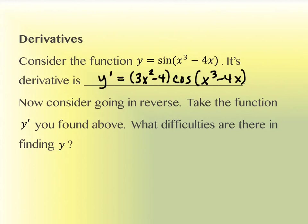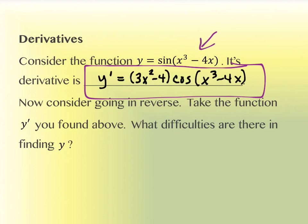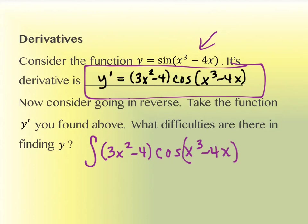What we're going to do in this section is we're going to consider going in reverse. That is, we're going to start with functions that look a lot more like this — a complicated expression — and try to go backwards to get the function that started out looking like sine of x cubed minus 4x. So we're starting with things that look like a complicated mess and they're actually becoming something more condensed when we get going.